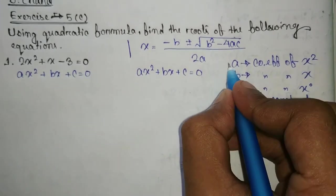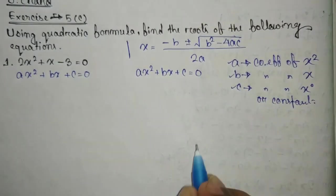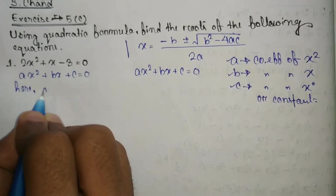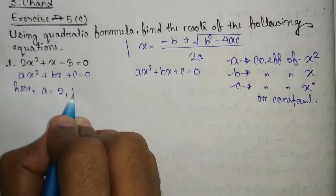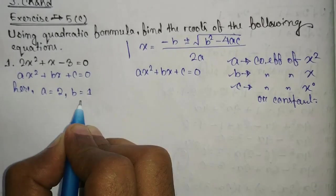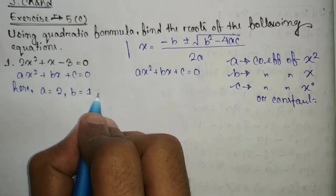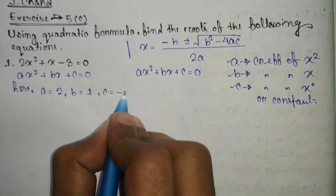Only then we get the value of a, b and c. Now in this case a equal to 2, b equal to 1. Only x means x into 1 and c equal to minus 3.